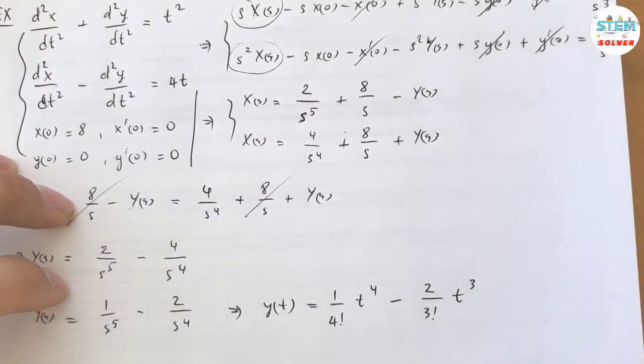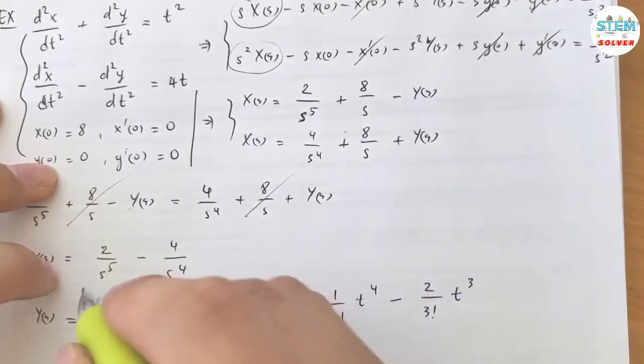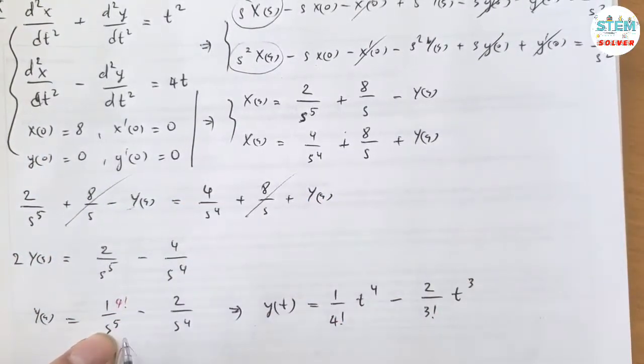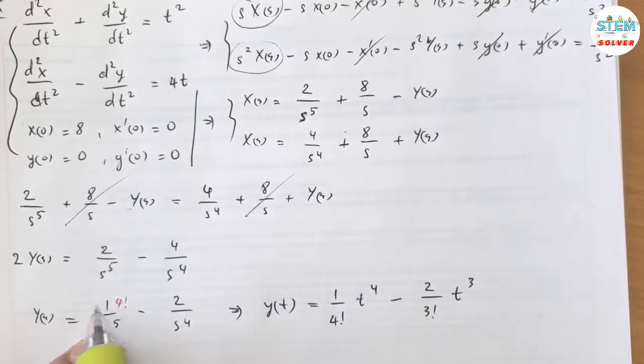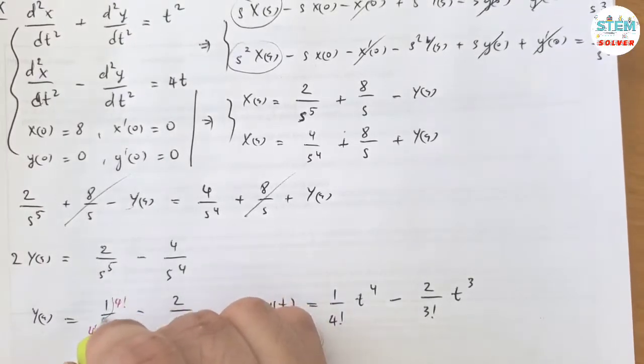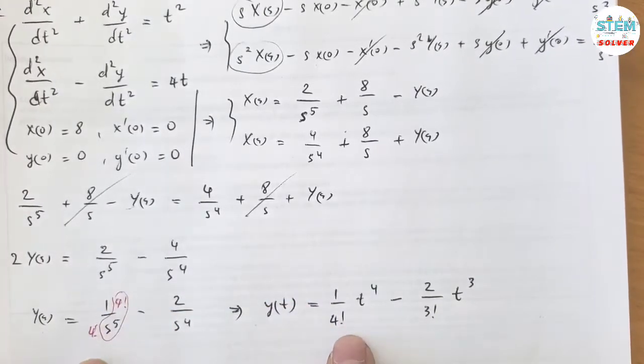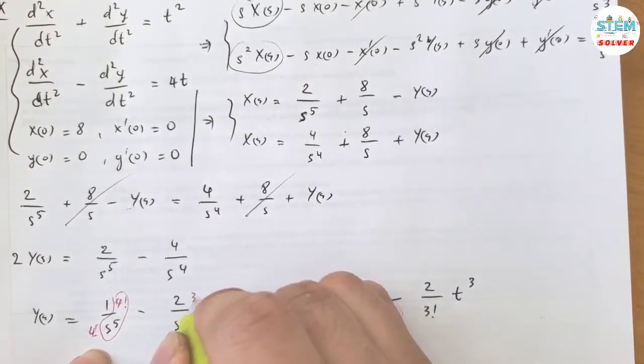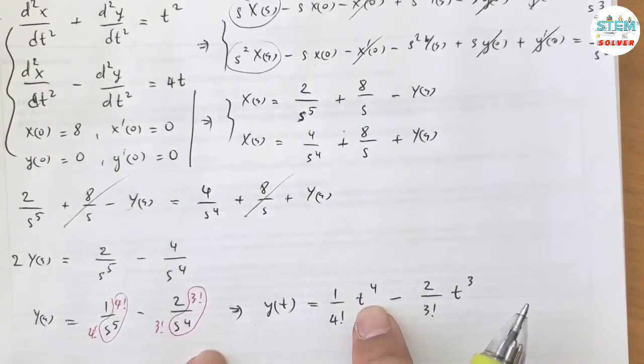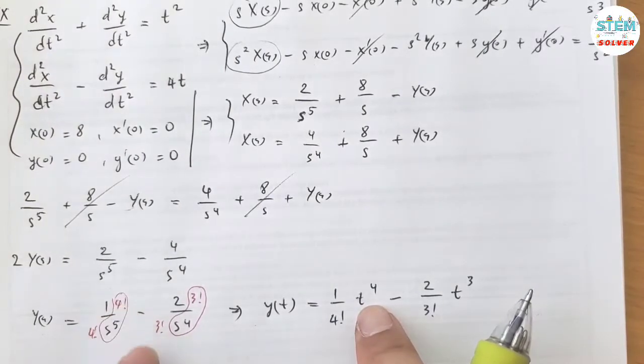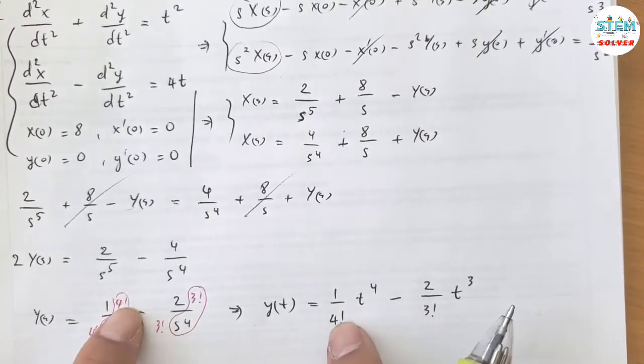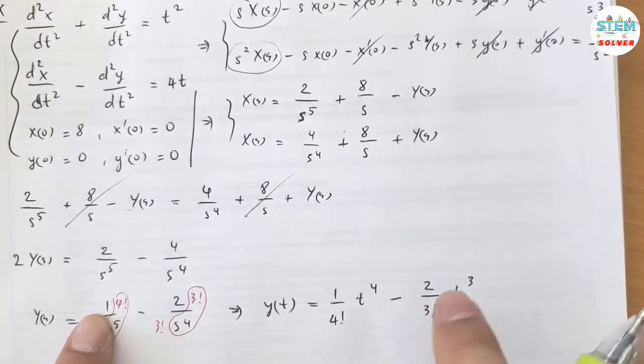The reason you have 1 over 4 factorial is you need to have 4 factorial over s to the fifth in order to get t to the fourth. But it doesn't have 4 factorial, so when I multiply by 4 factorial I have to divide by 4 factorial to compensate. Same reason for this one: 3 factorial on top, 3 factorial on bottom.